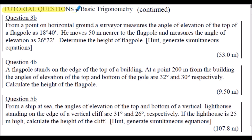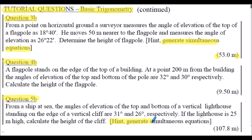Tutorial questions related to basic trigonometry continued: Questions 3b, 4b, and 5b. I encourage you to attempt these questions — the answers are shown in brackets. Note that in Question 3b the hint says to generate simultaneous equations, and in Question 5b the hint is also to generate simultaneous equations. On the following slide I have shown the full solution for Question 3b for your reference.